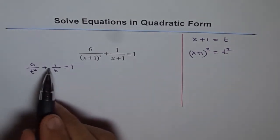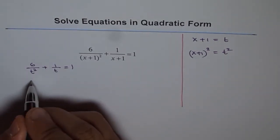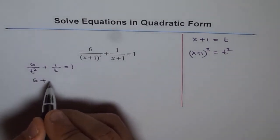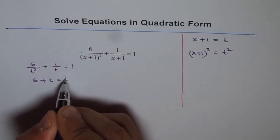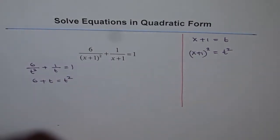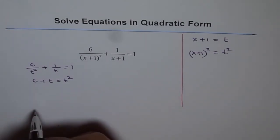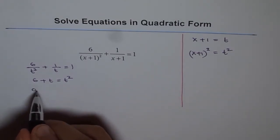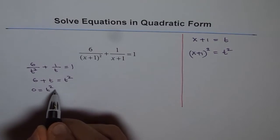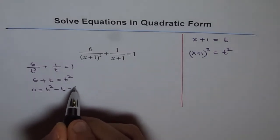Now to solve this, let's multiply everything by t square. So we get 6 plus t equals t square. Now it is in quadratic form.